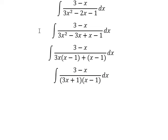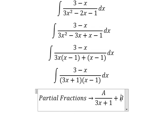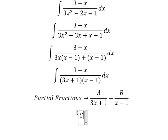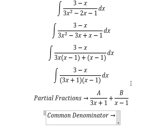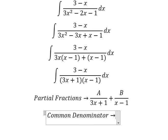Now we can use partial fractions. I will put A over (3x + 1) and B over (x - 1). Now we do common denominator. This one is missing (x - 1), so capital A is multiplied by (x - 1).